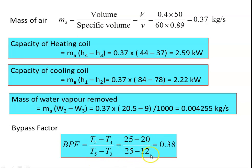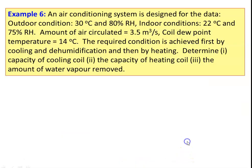Calculating the bypass factor: (25 − 20) / (25 − 12) = 5 / 13 ≈ 0.38. Bypass factor is approximately 0.38.